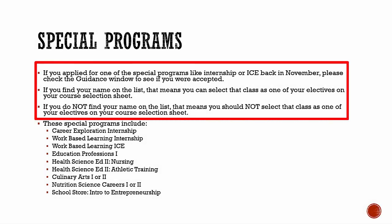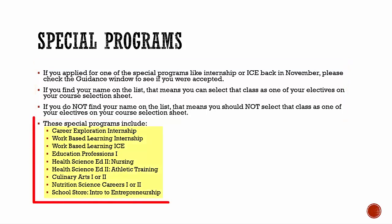If you applied for one of the special programs like internship or ICE, please check the window outside of the guidance office to see if you were accepted. If your name is on the list, you can put this on your course selection sheet. Special programs include career exploration internship, work-based learning internship, cooperative education (ICE), education professions one, health science ed two nursing, health science ed two athletic training, nutrition science careers one or two, culinary arts one or two, and the school store intro to entrepreneurship.